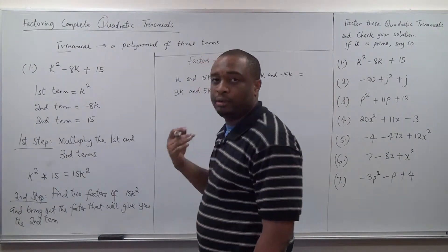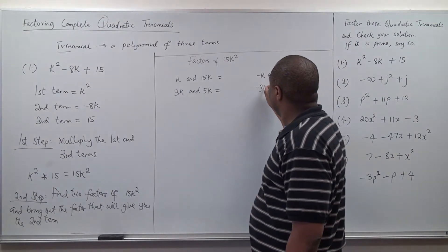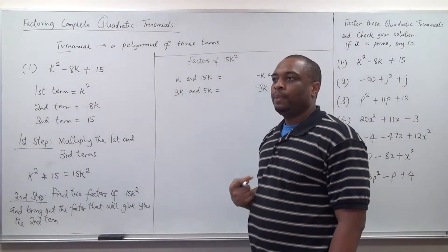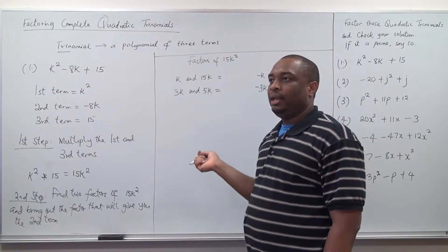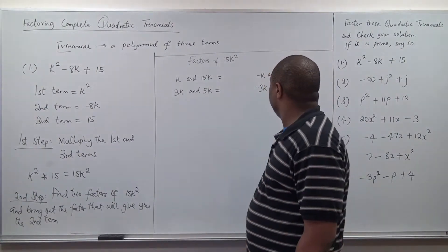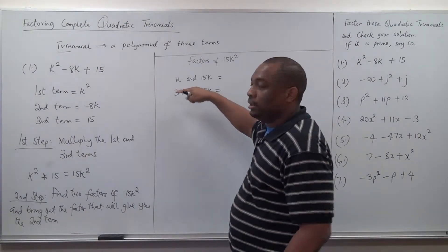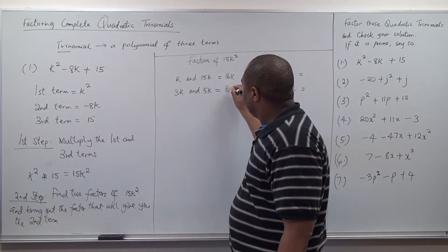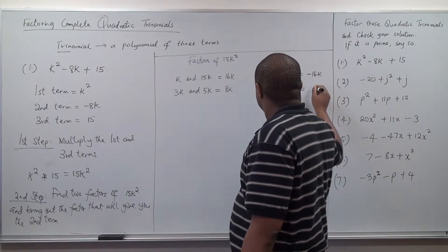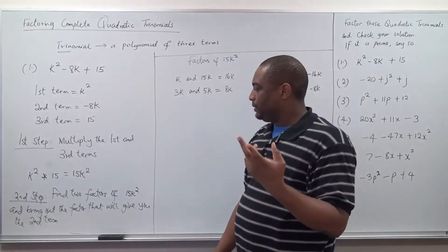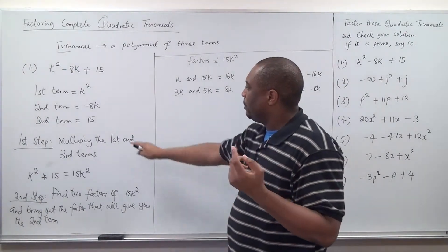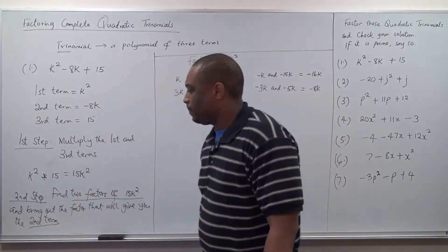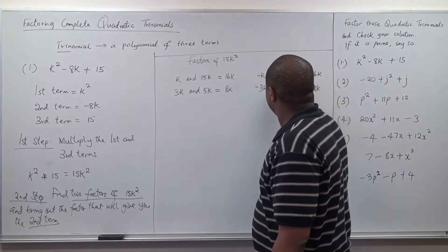For you to know this, you will have to know your factors and multiples. You also have negative 3k and negative 15k. Five and three is the same thing as three and five, so all you have additionally is negative 5k. Let's combine these factors and see what each gives us. k and 15k gives 16k. 3k and 5k gives 8k. Negative k and negative 15k gives negative 16k. And negative 3k and negative 5k gives negative 8k. We want two factors of 15k squared that give us the second term, which is negative 8k. So the two factors we need are negative 3k and negative 5k — let's circle them.